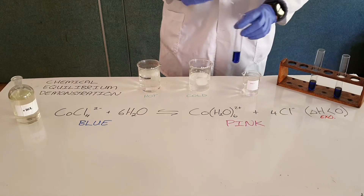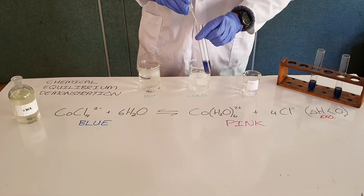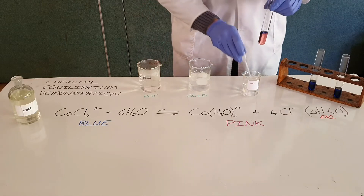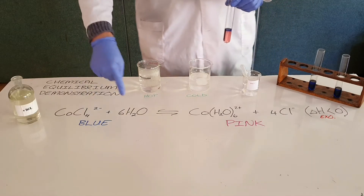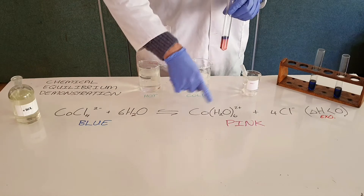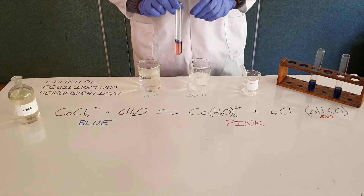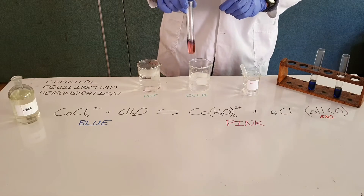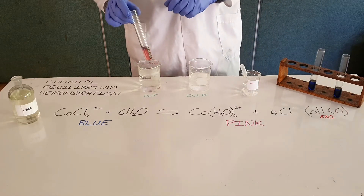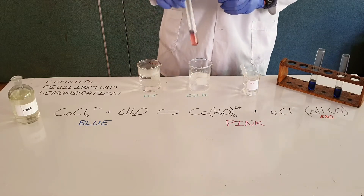We are going to add some water to this solution, which sets the forward reaction in motion. The forward reaction — cobalt chloride plus water — produces cobalt hexahydrate and chlorine ions. As we can see, we have formed a slightly pink solution, and it is at equilibrium where there is a certain amount of blue still present in the solution.